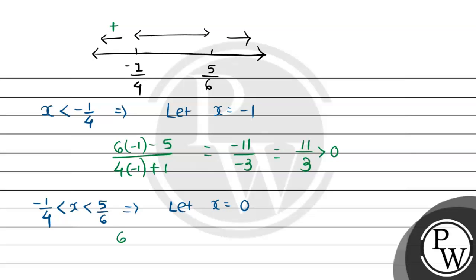Let x be 0. Our solution will be 6 into 0 minus 5 divided by 4 into 0 plus 1, which equals minus 5 divided by 1, that is minus 5, that is less than 0. So here we get negative in the interval minus 1 by 4 to 5 by 6.